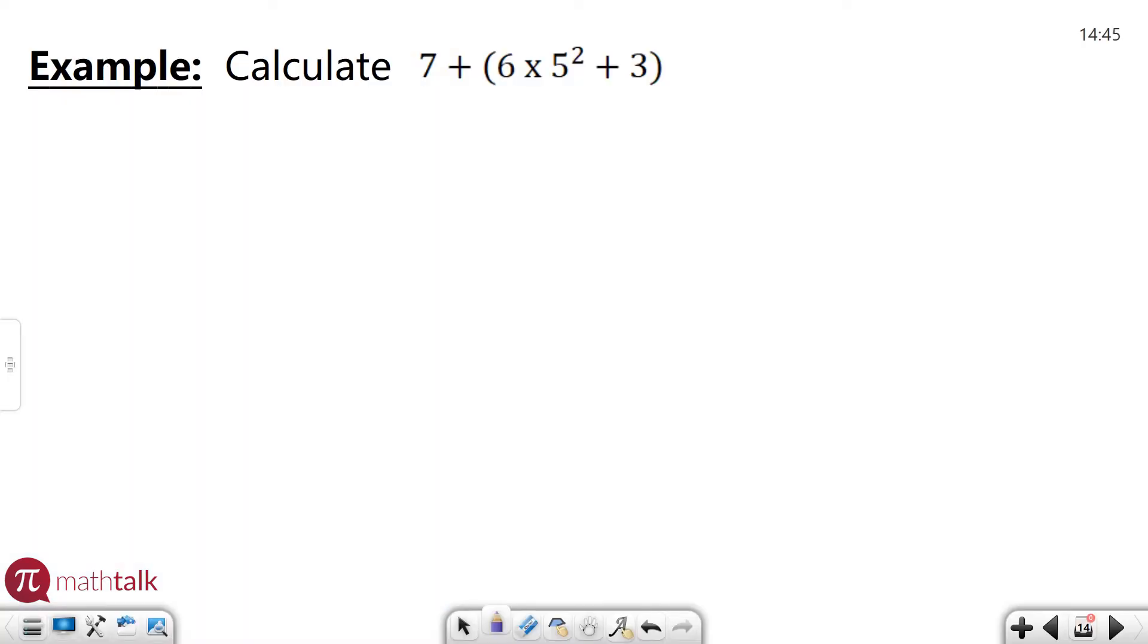So the first one says basically calculate this expression, seven plus in parentheses, six times five squared plus three. So we're going to use the order of operations to solve this and figure out where to start. So PEMDAS says do parentheses first. And one of the rules is that when you're in PEMDAS you want to follow the order of operations for anything inside of parentheses.